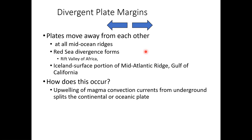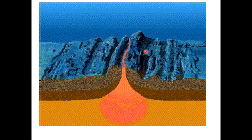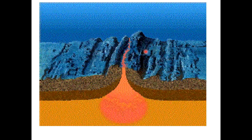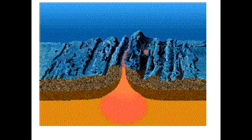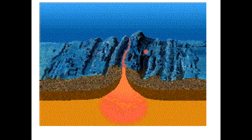This happens because magma is coming from the mantle, putting pressure on the ocean floor rocks, causing them to break. As the lava moves out, it causes the ocean floor to open up, to get wider and larger. It's like a conveyor belt just creating more new ocean floor.